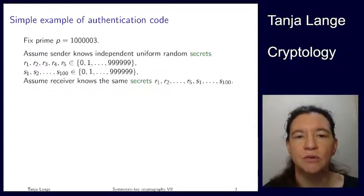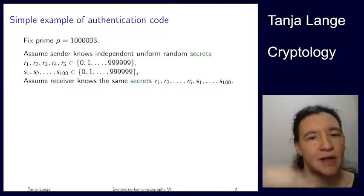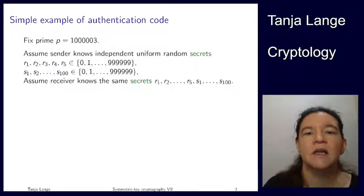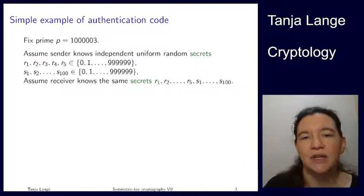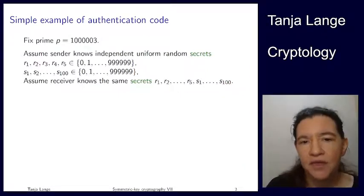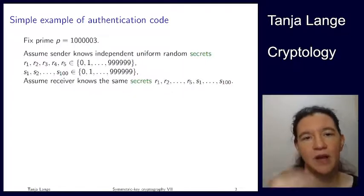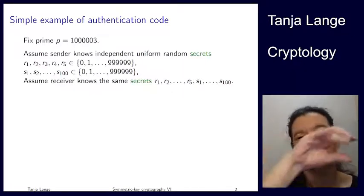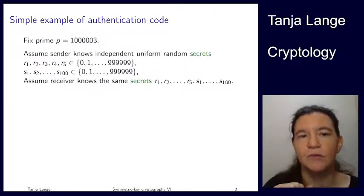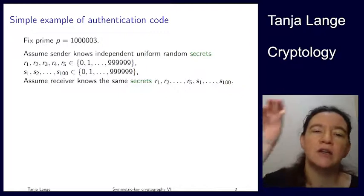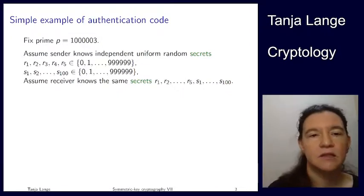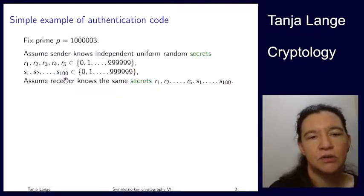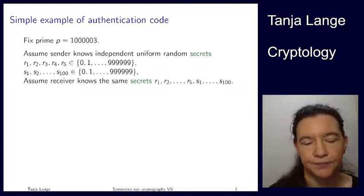Assume they both share these. In our big example of the internet, these would be just another thing you derive from a key exchange. A key exchange gives you one key for encryption, and also gives you these shared secrets that you will use for the message authentication code.